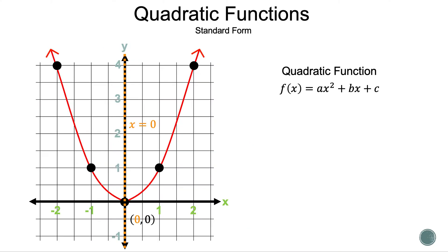Now let's take a look at a quadratic function in standard form so we can get a feel for it. Remember, the form we want is f of x is equal to ax squared plus bx plus c, where c is the y-intercept.